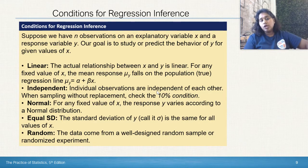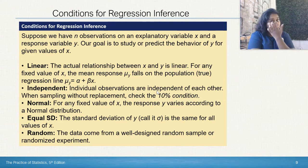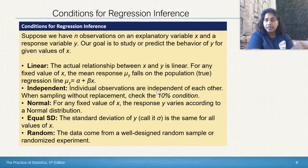Suppose we have n observations of an explanatory variable x and a response variable y. Our goal is to study or predict the y for given x. We need to have it follow these five parts: linear, independent, normal, equal, and random.